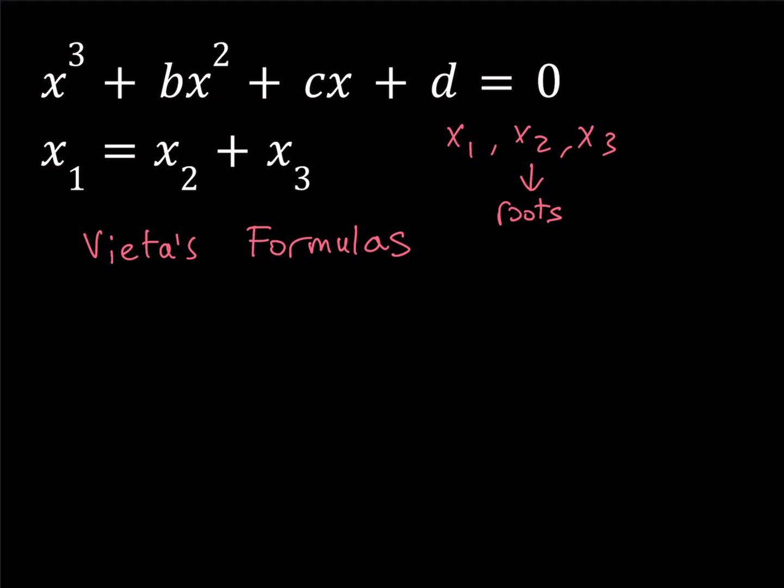Otherwise it would be negative b over a, but we're going to be writing it as negative b. So the first relationship from Vieta's formulas is x1 plus x2 plus x3, which is the sum of the roots, and it's given as negative b over a, but since a equals 1, it's just negative b.